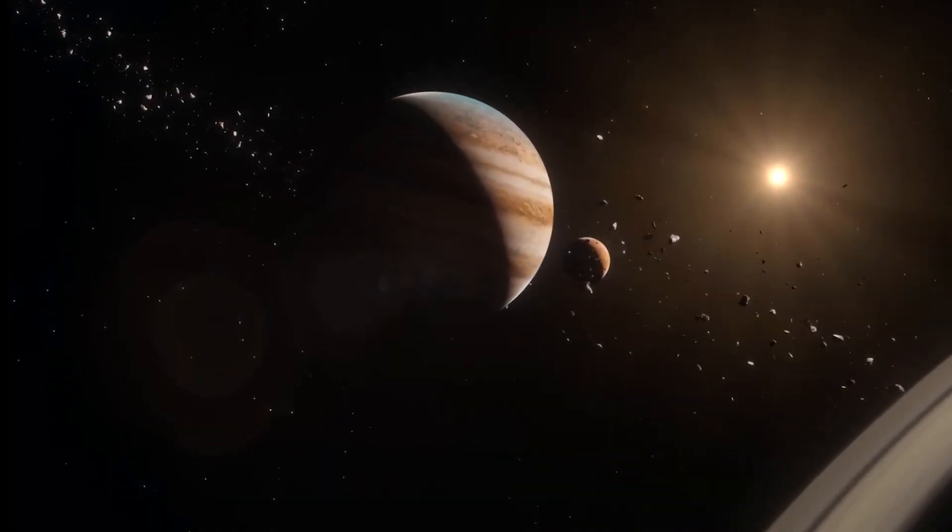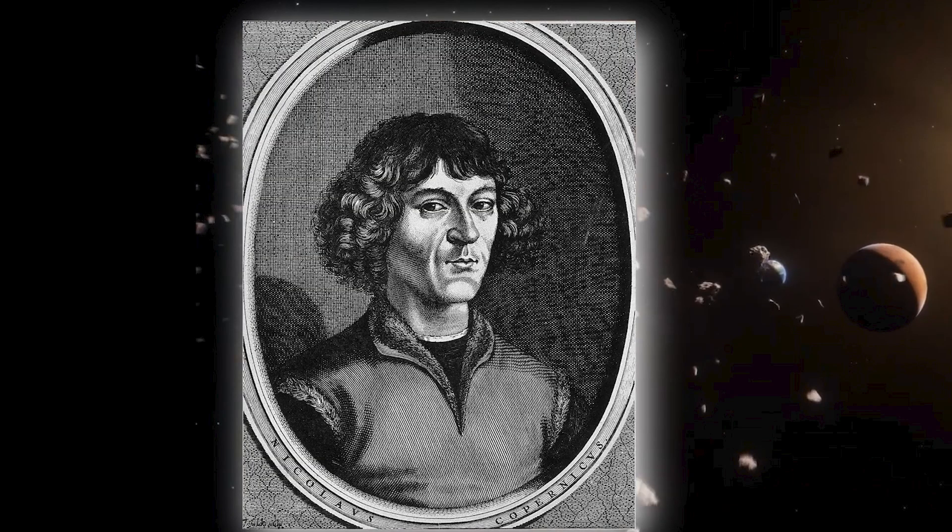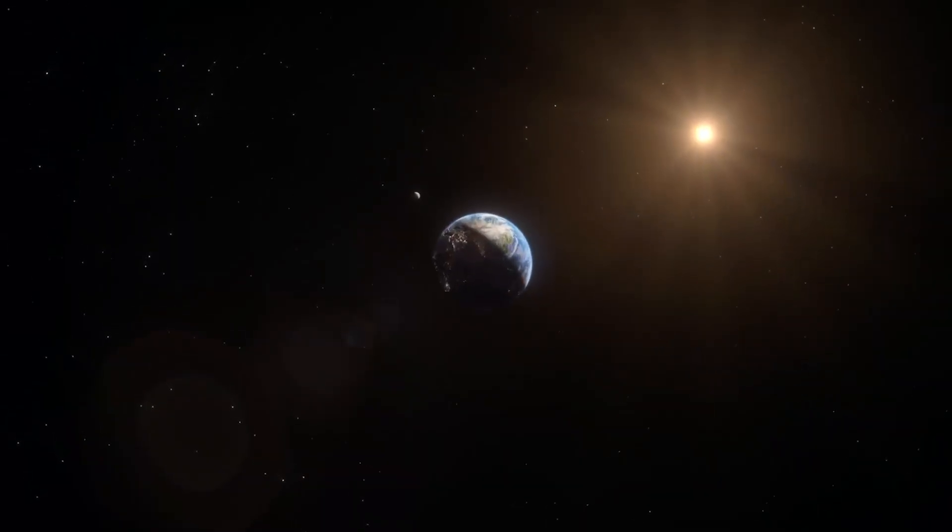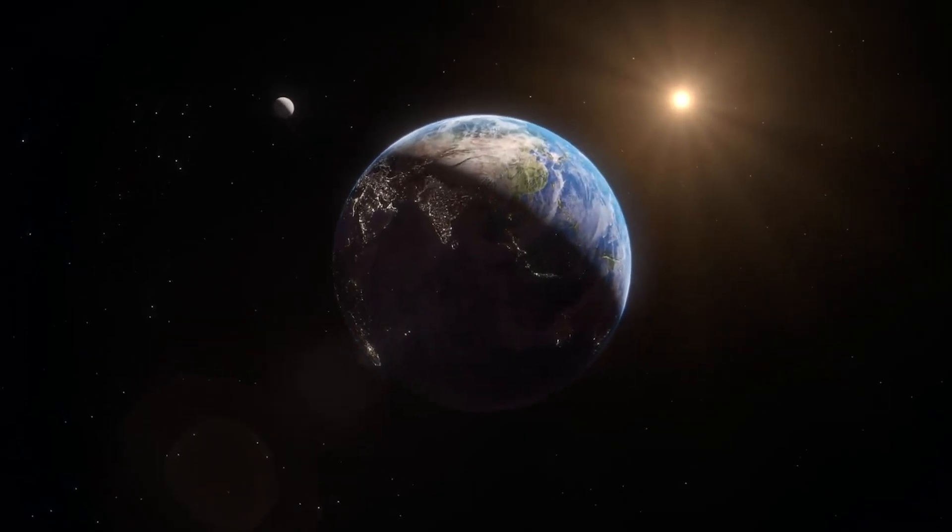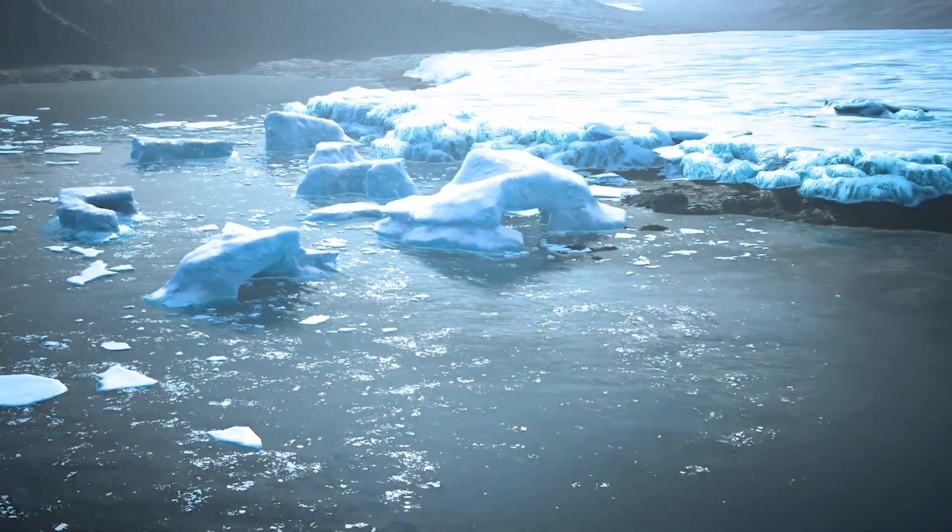Then came the Renaissance. In the 1500s, Nicolaus Copernicus proposed a heliocentric model, suggesting that Earth was just one of several planets orbiting the sun. This idea was revolutionary, shaking the foundations of centuries-old thinking.